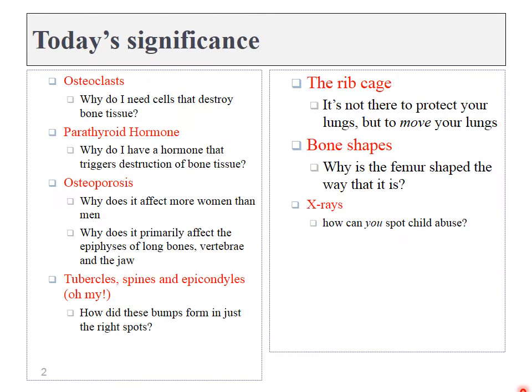Chapter 6, Bone Tissue. In today's lecture, we'll talk about osteoclasts, a cell type whose job it is to destroy bone tissue. They are under the control of parathyroid hormone, so we need to ask: why do I have a hormone and a cell type whose job it is to destroy bone tissue? When would that ever be useful? Because too much of that leads to osteoporosis, one of the diseases we need to learn about today.